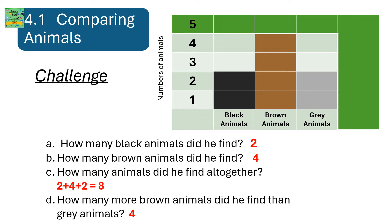How many brown animals did he find? 4. How many animals did he find altogether? You have to add the number of black animals, brown animals and grey animals. That is 2 plus 4 plus 2 equals 8. How many more brown animals did he find than grey animals? It's 4.